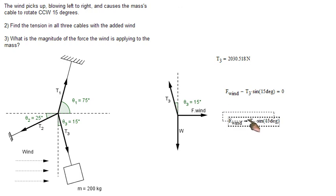Solving for the force of the wind, we get F wind equals T3 sine 15. And plug it into your calculator and the force of the wind equals 525.5 Newtons.